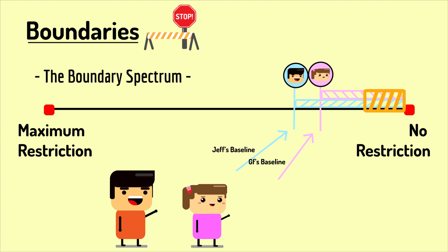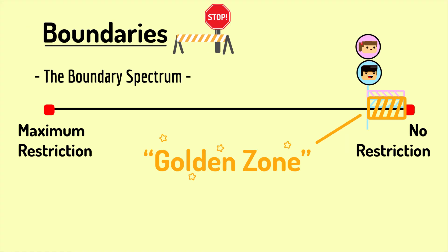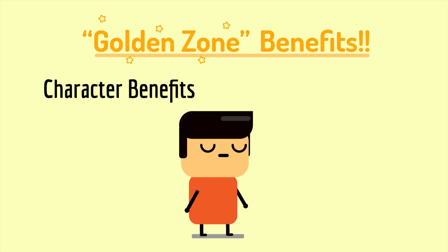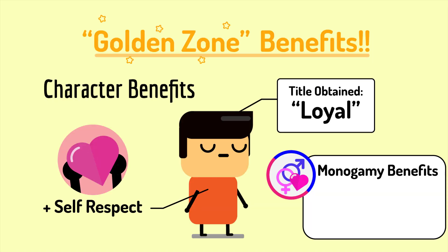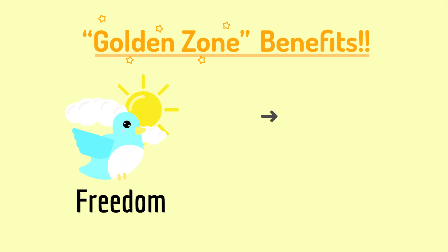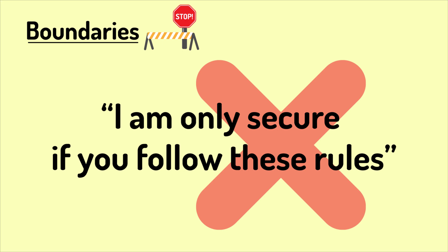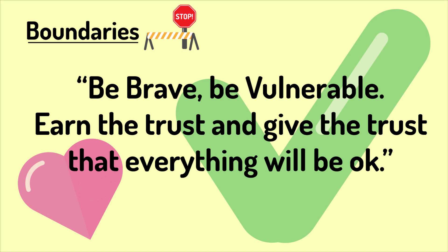By moving towards the Golden Zone intentionally, you learn to lower your guard and be vulnerable to one another, not allowing harmless actions to weigh down on the relationship. Once the relationship maintains its baseline in the Golden Zone, you maximize the benefits that come with it — character benefits like loyalty and self-respect from being in a monogamous relationship, where dedication and commitment are reflected in your character. There are also benefits like freedom and independence, where you feel free yet safe and secure without the downsides of restrictions. Instead of saying "I am only secure if you follow these rules," we should aim to be brave, be vulnerable, earn the trust, and give the trust that everything will be okay.